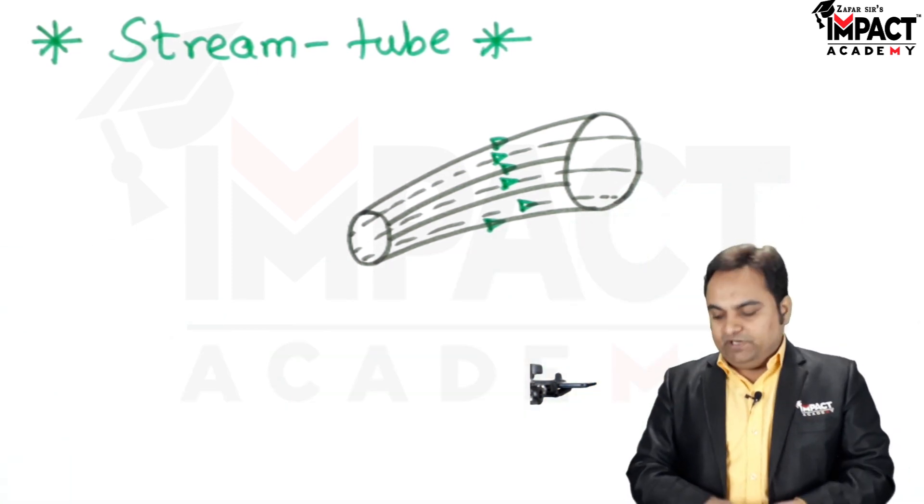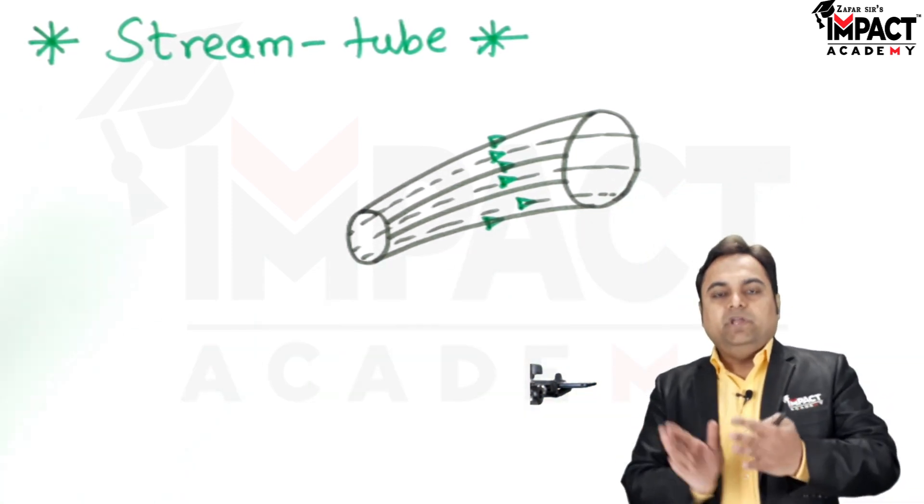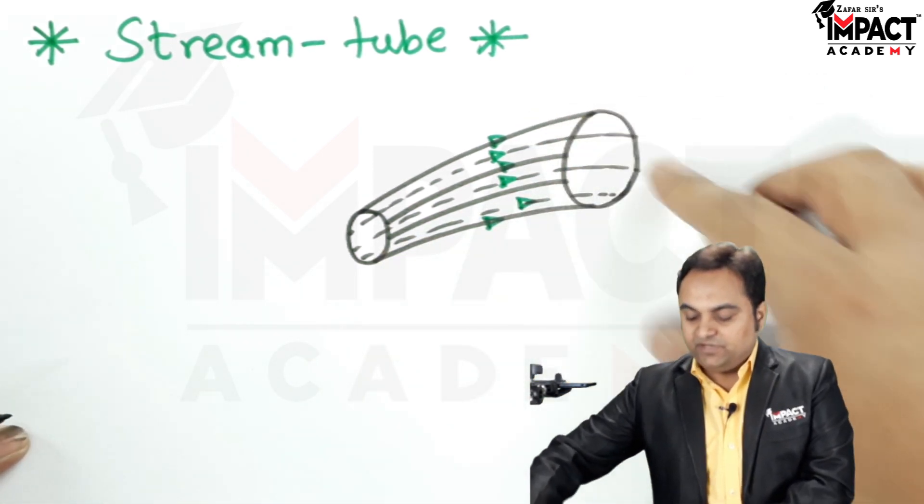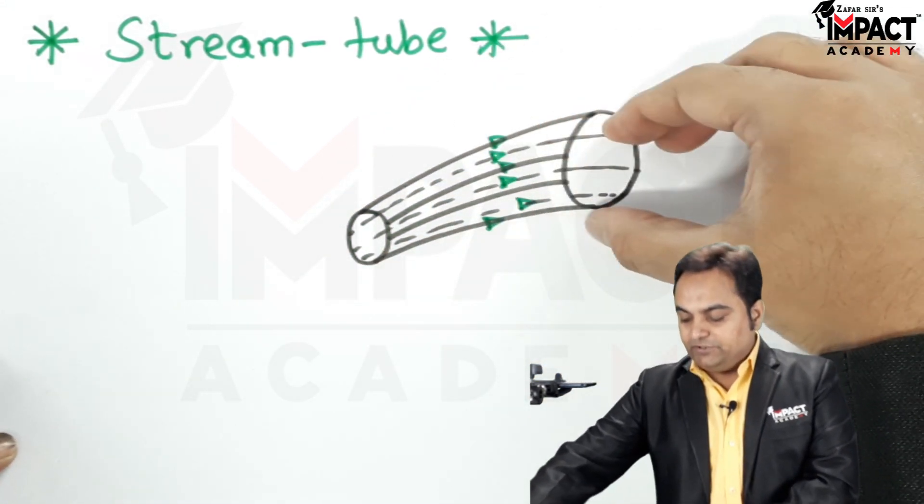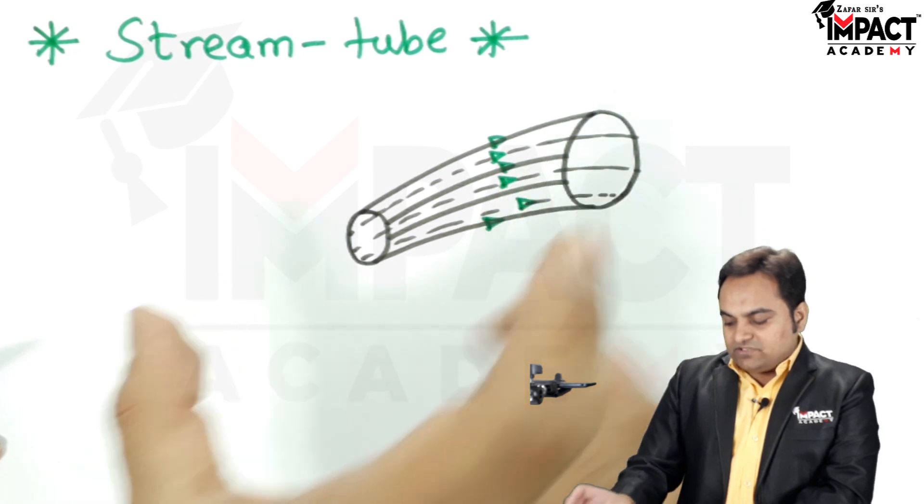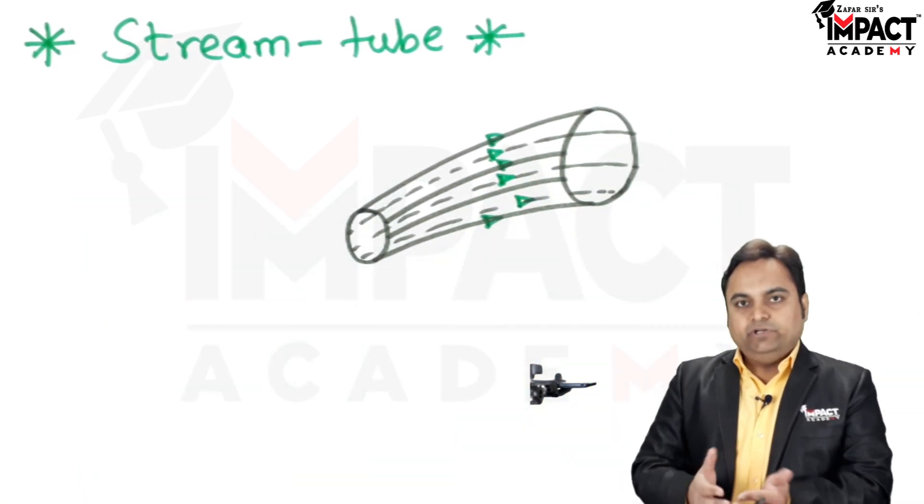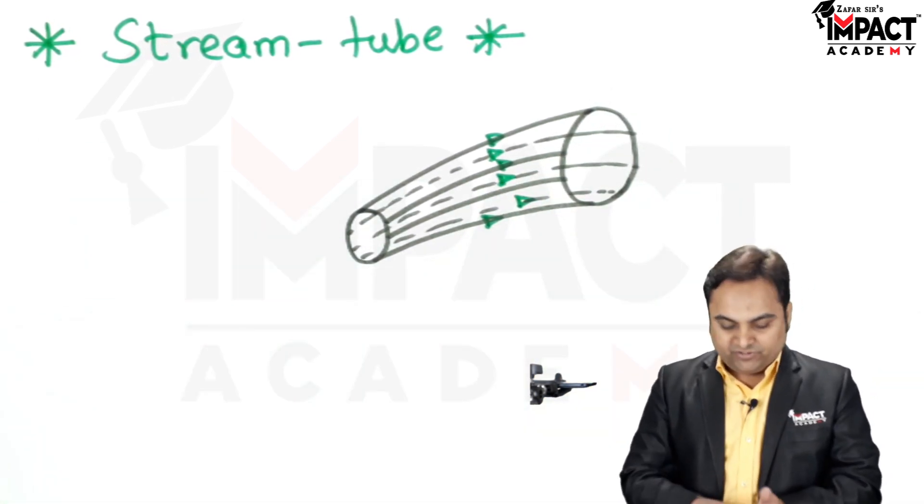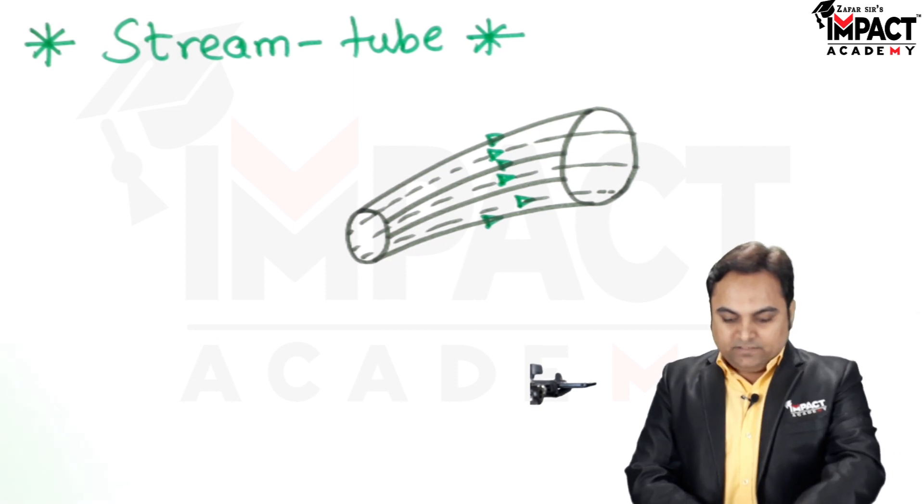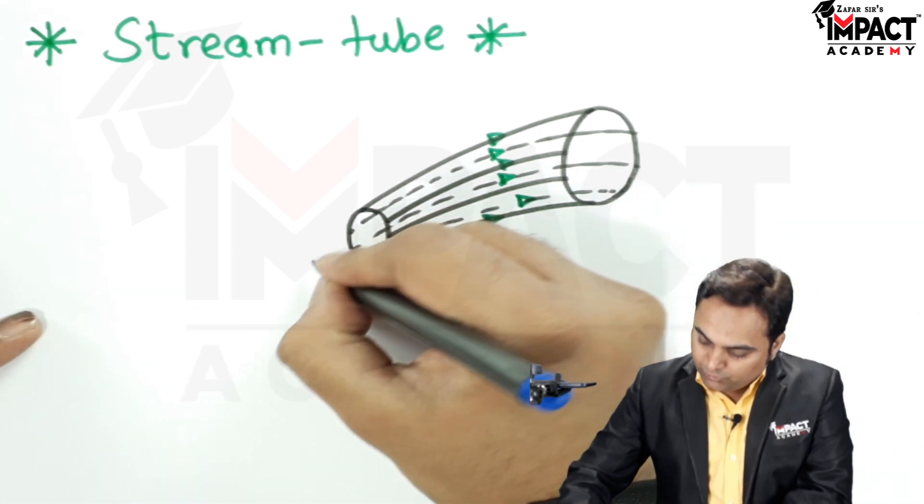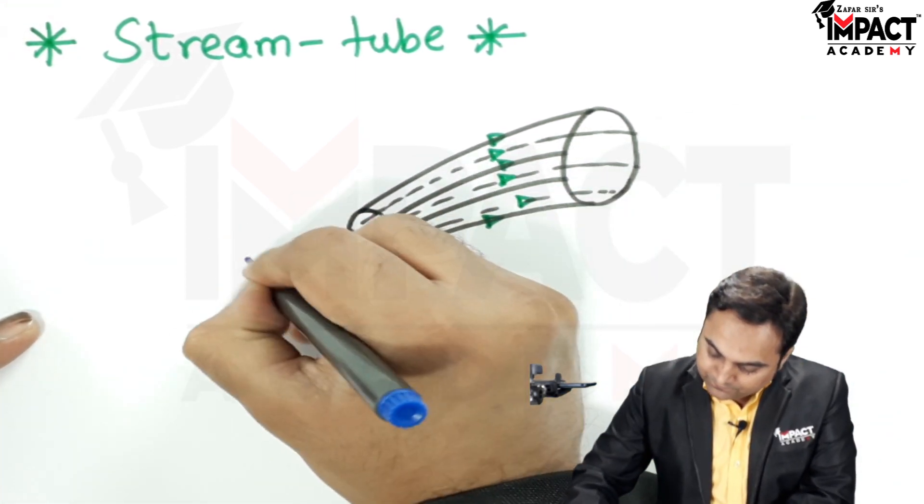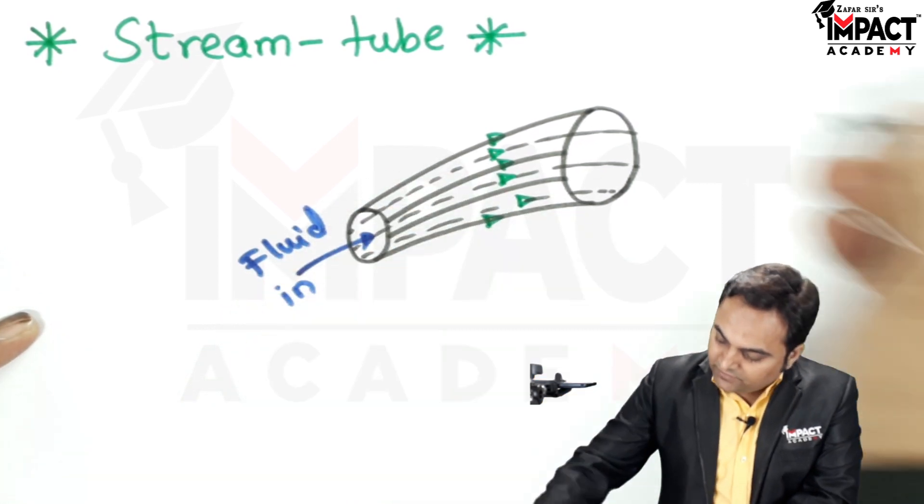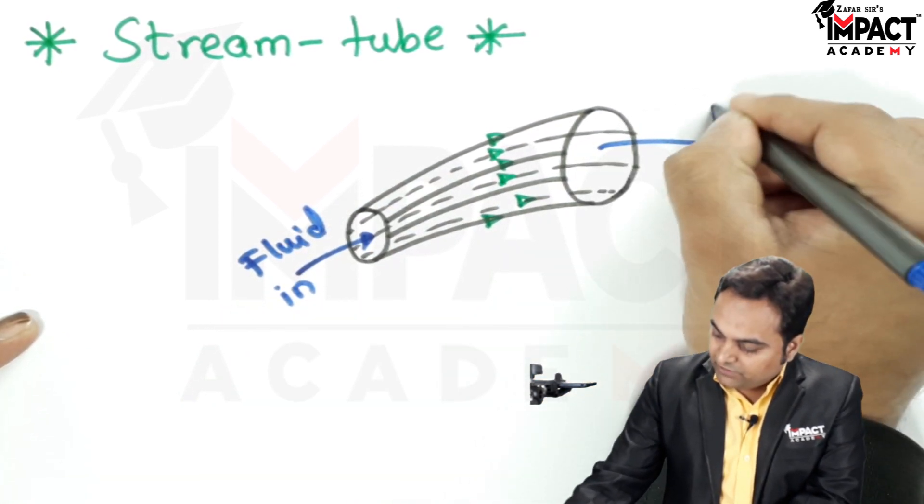What is a stream tube? It basically consists of various streamlines. So here we have different streamlines which are making a tube and it contains the fluid that is some fluid is bounded or inside this stream tube and the fluid may enter the stream tube over here and then it is going to leave the stream tube from the other side.